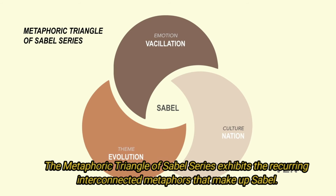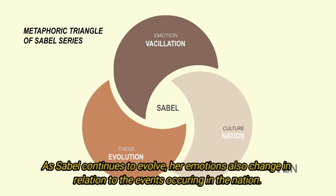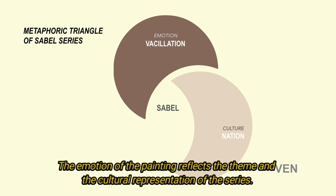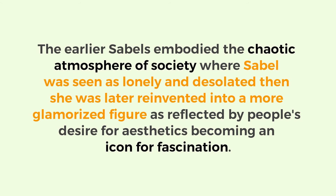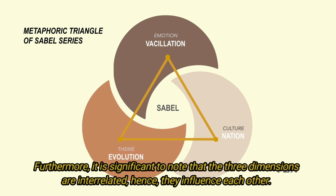The metaphoric triangle of the SABEL series exhibits recurring interconnected metaphors that make up SABEL. Starting with evolution, SABEL undergoes the process of transformation through different periods. As SABEL continues to evolve, her emotions also change in relation to the events occurring in the nation. The emotion of the painting reflects the theme and the cultural representation of the series. The earlier SABELs embodied the chaotic atmosphere of society where SABEL was seen as lonely and desolated, then she was later reinvented into a more glamorized figure as reflected by people's desire for aesthetics, becoming an icon for fascination. Hence SABEL is a mirror of the history of the nation, reflecting the struggles between social classes, protest and rebellion, and evolution within the nation. It is significant to note that the three dimensions are interrelated and hence influence each other.